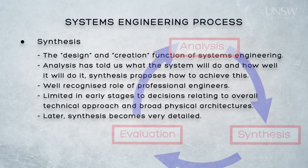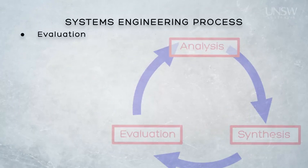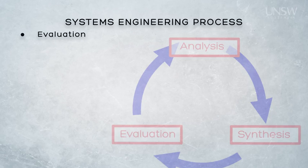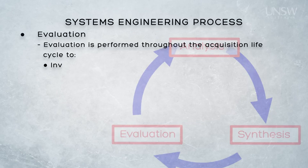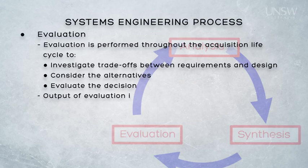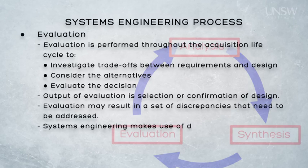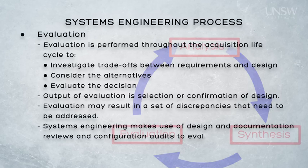After completing analysis and then synthesis, we have some candidate designs. Evaluation is the process of investigating the trade-offs between those designs — at the earliest time, it is the evaluation between requirements and design alternatives and making the necessary decisions. But that process continues throughout all stages of the system engineering effort, ultimately determining whether the system satisfies the original requirements. Discrepancies are also identified if applicable, and may result in further analysis and synthesis as the loop is closed.